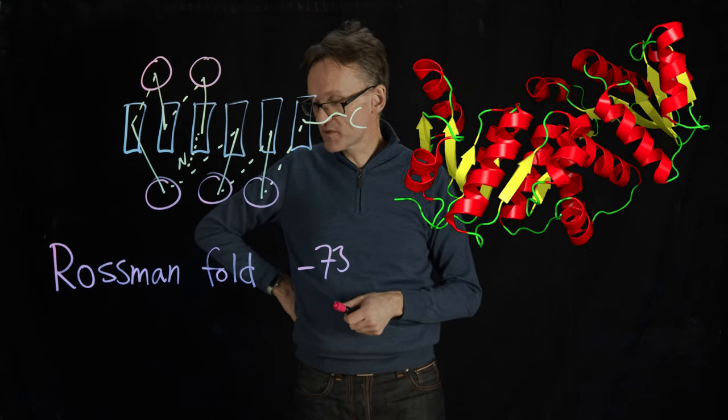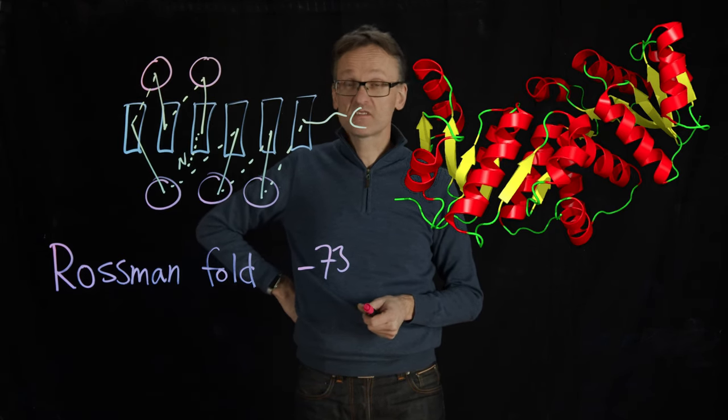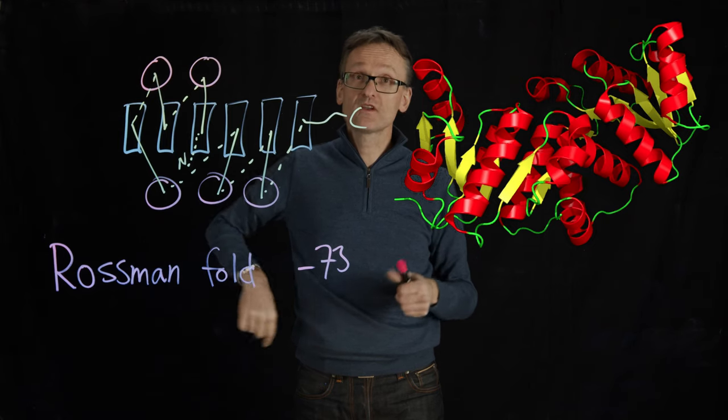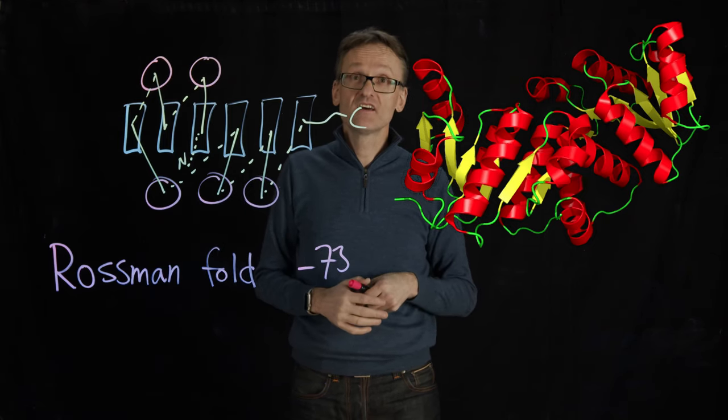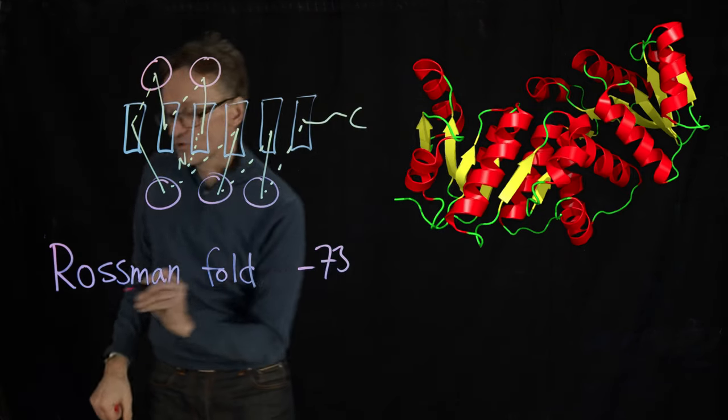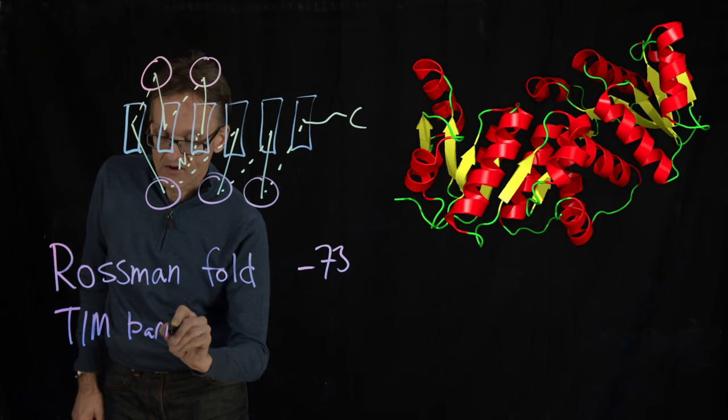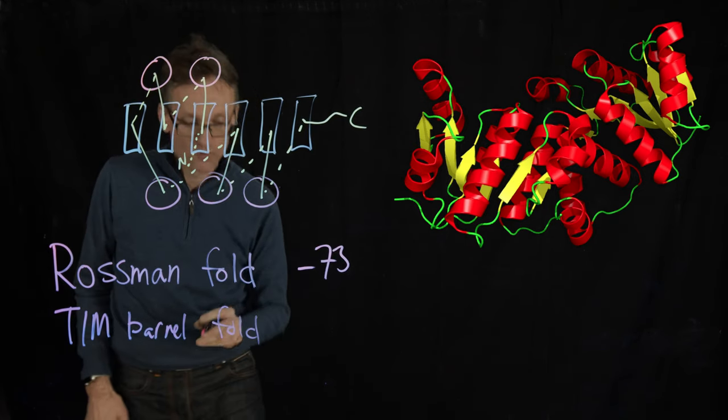So you have the Rossman fold, we have the TIM barrel. They're kind of secondary structure elements but they so commonly occur as an entire domain in a protein that we've given them a name. They're really folds. So Rossman fold and a TIM barrel fold.